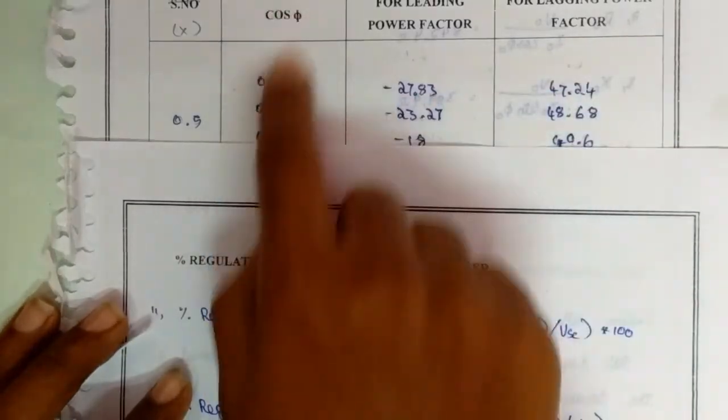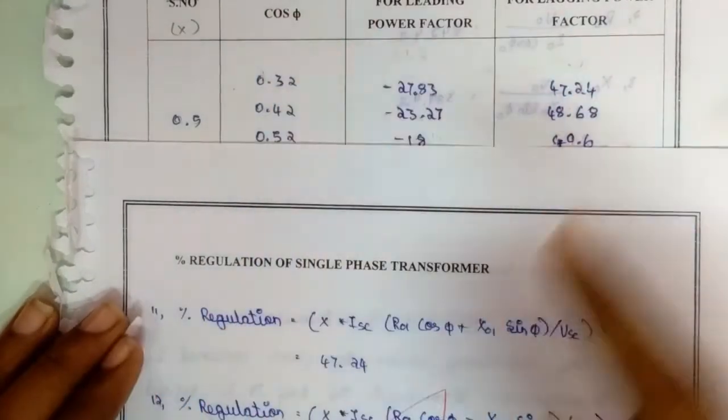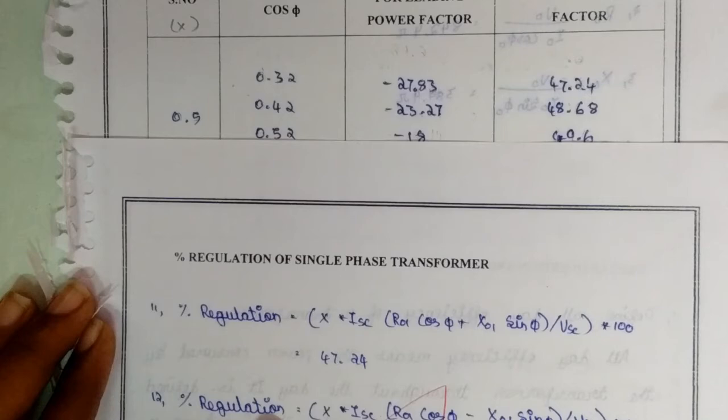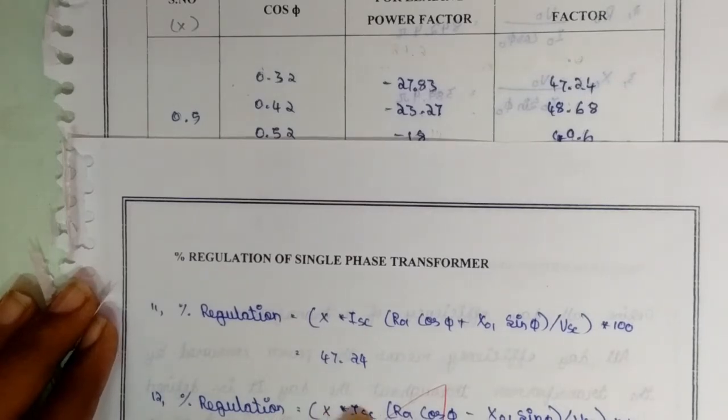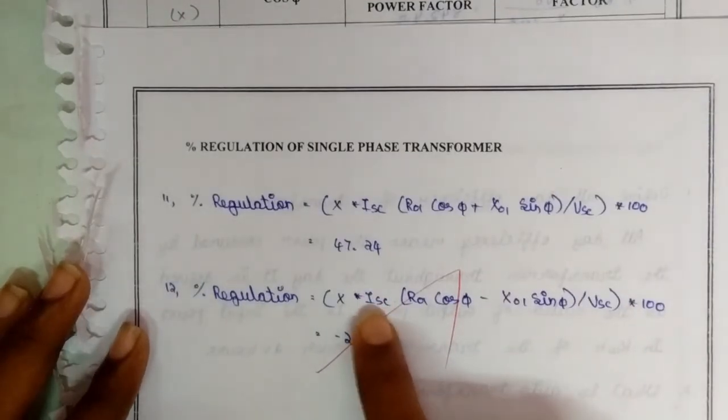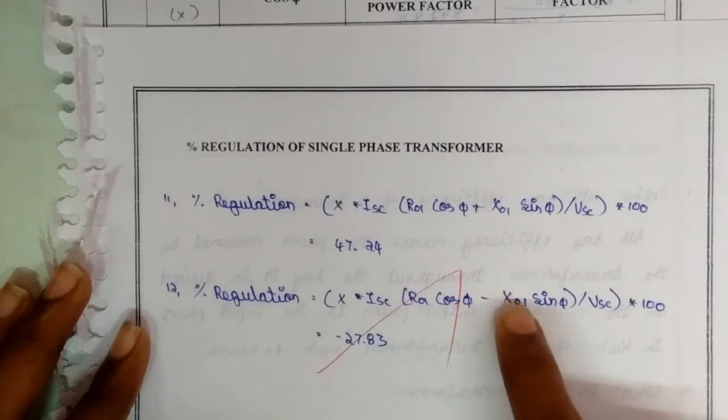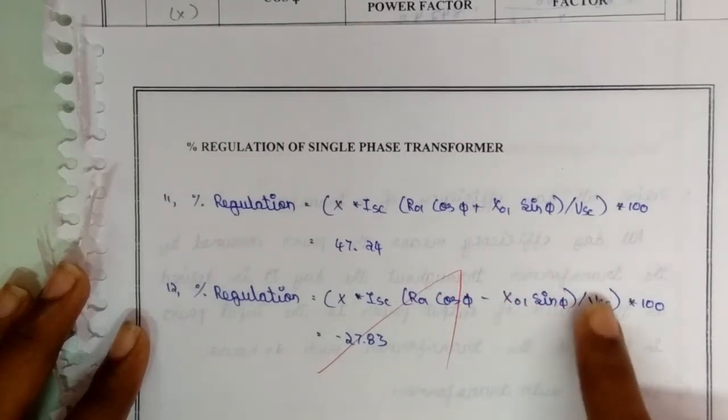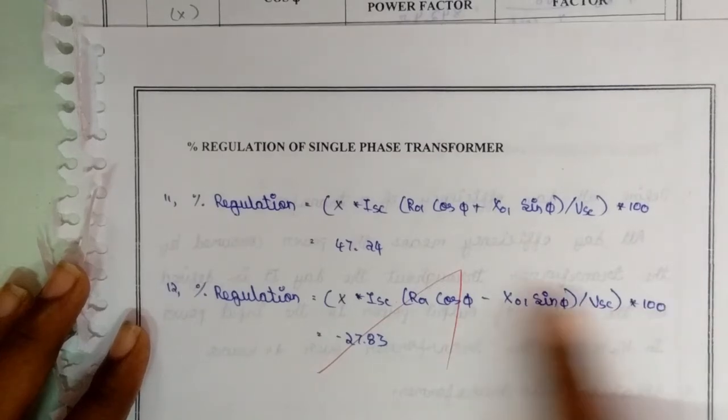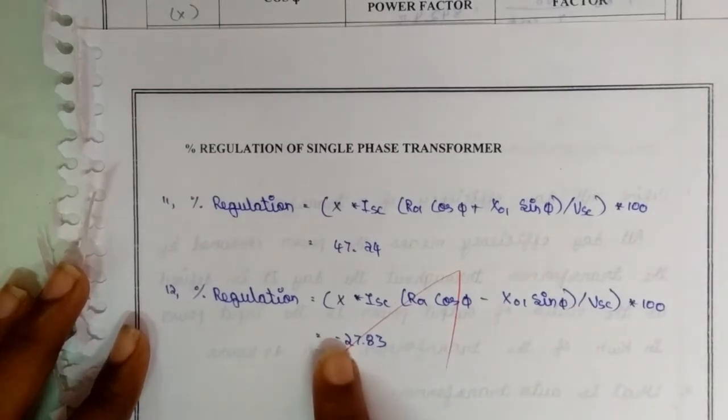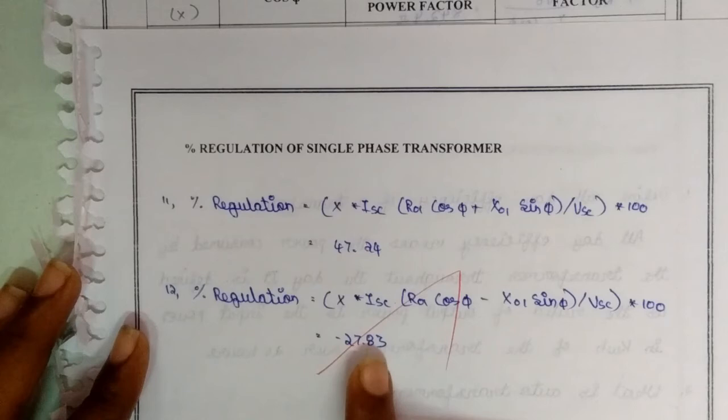And for a leading power factor, the formula will be X into ISC into R₀₁ cos φ minus X₀₁ sin φ divided by VSE into 100. The value will be 27.83.